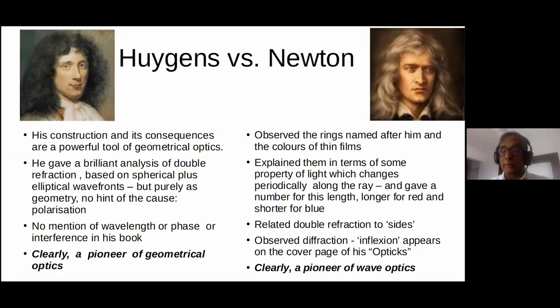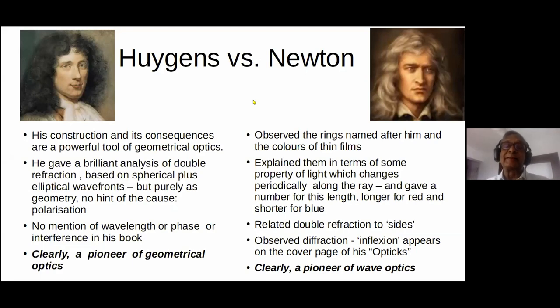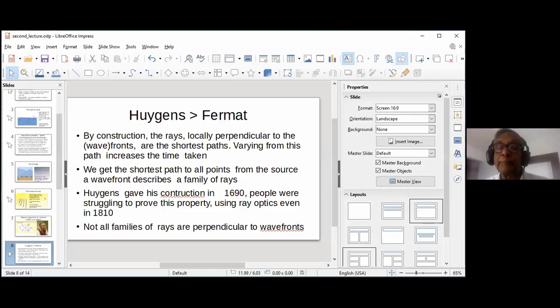So I submit to you that contrary to what you have been taught, the greatest figure in geometrical optics in the 17th century was Huygens, and the greatest figure in wave optics was actually Newton. I'm telling you an alternative history of light. Now we must be worrying that we are spending a lot of time on geometrical optics, but I hope I've shown you things at least in a different way from what you've learned.